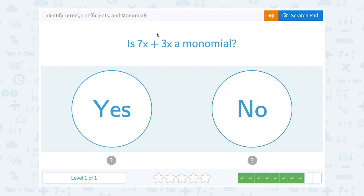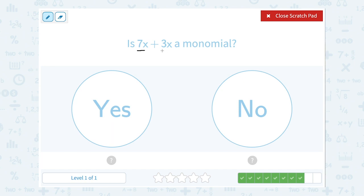Is 7x plus 3x a monomial? And no, remember, those terms are separated by the plus sign. So this has two terms. A monomial means only one term, so no.